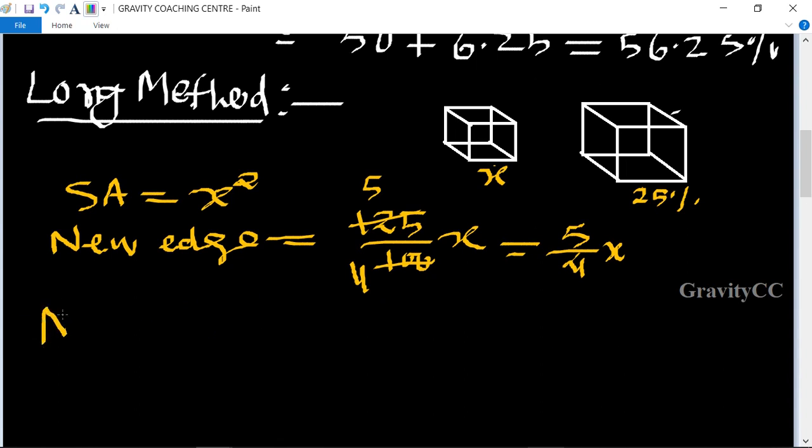The new surface area equals 6 × (5x/4)² = 6 × 25x²/16.